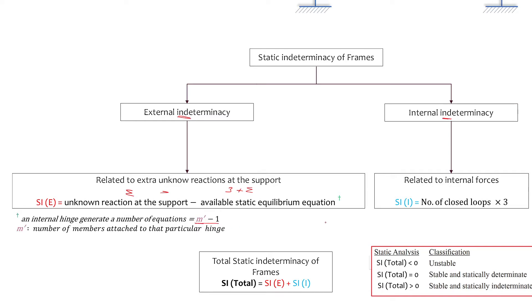So if there are two members attached to a hinge, the available equations it gives us is 1. The internal indeterminacy is simply the number of closed loops multiplied by 3. For example, if you have a frame with two closed loops, it's 2 multiplied by 3.